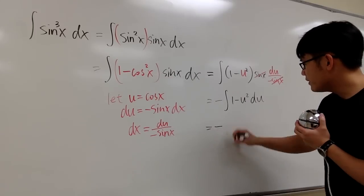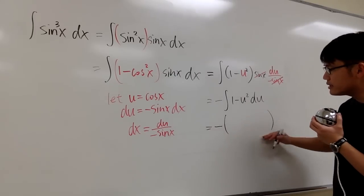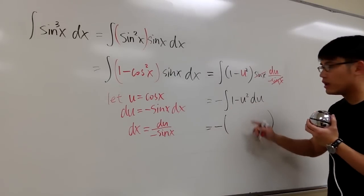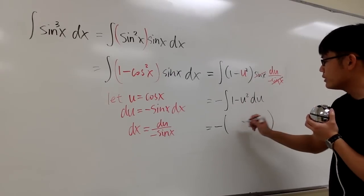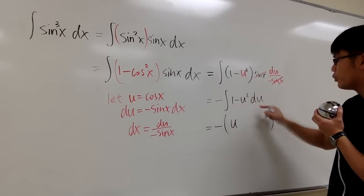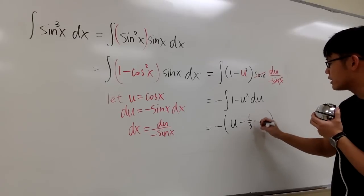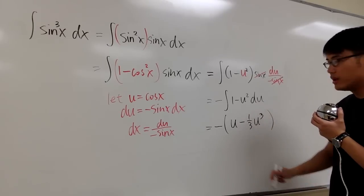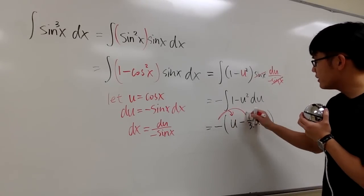Let's put down negative, and then I will have to open the parentheses to put down the result. The integral of 1 in the u world is just u, and the integral of negative u to the second power in the u world will be minus one third u to the third power.